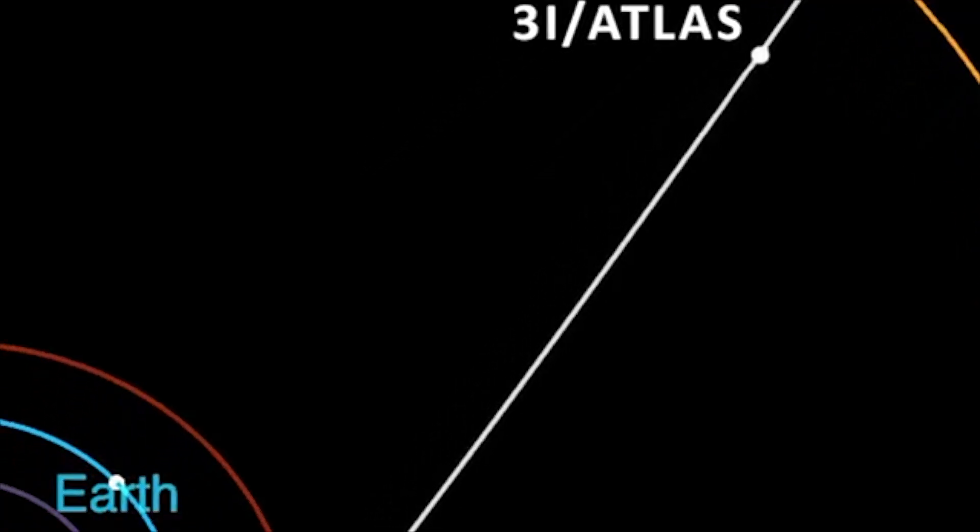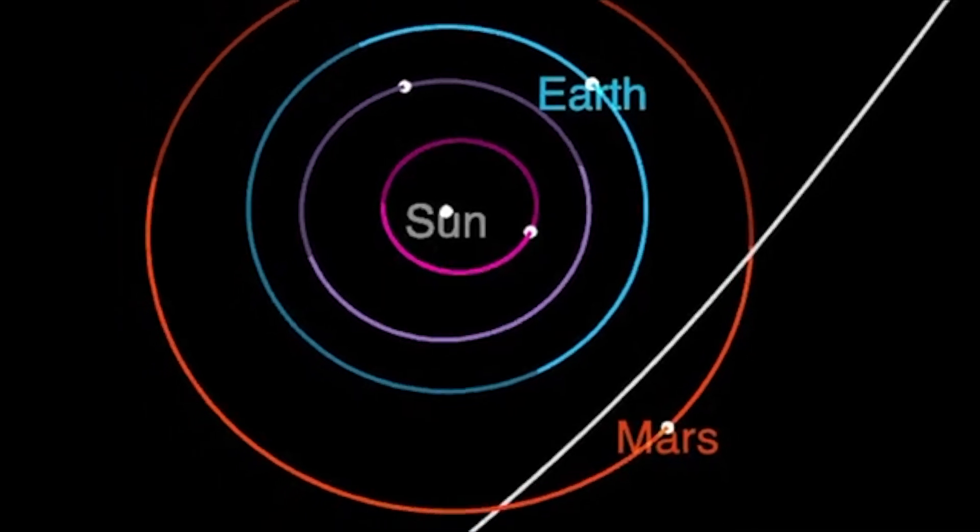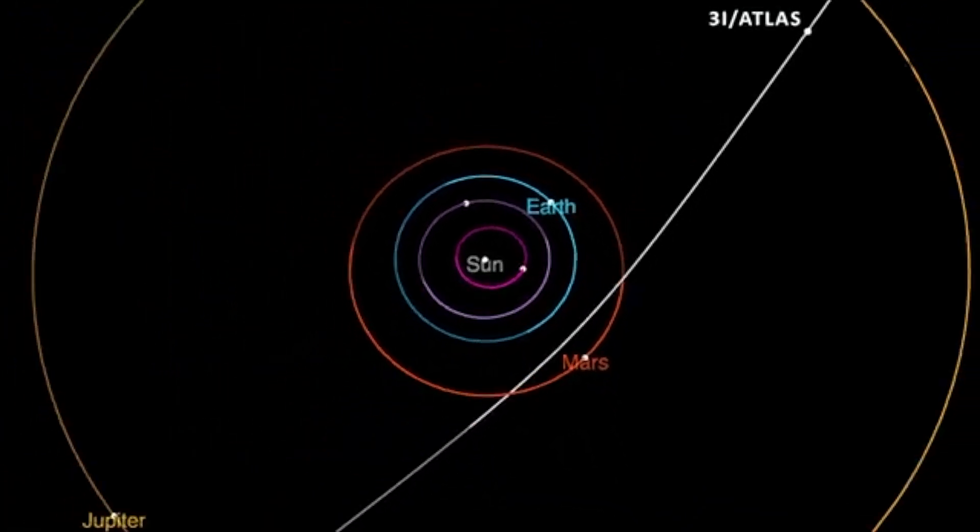Comet 3I Atlas will make its closest approach to the sun in October 2025, but don't worry, it won't be anywhere near Earth.